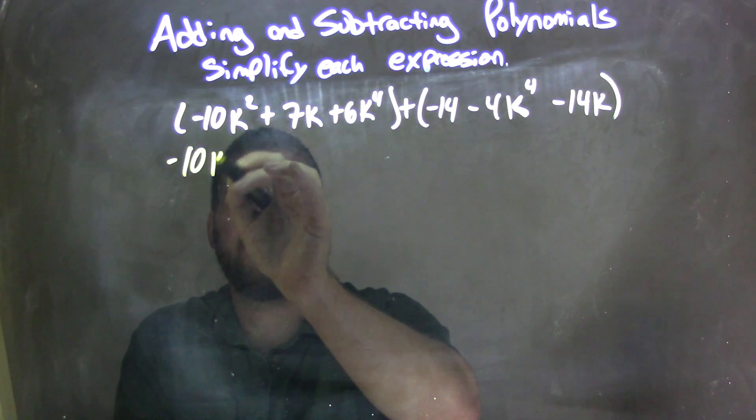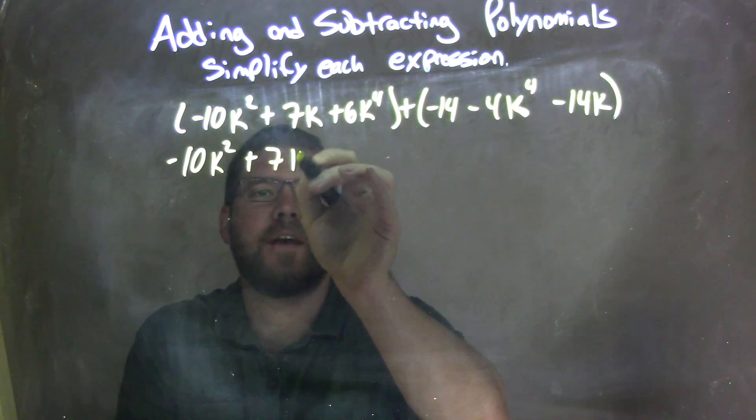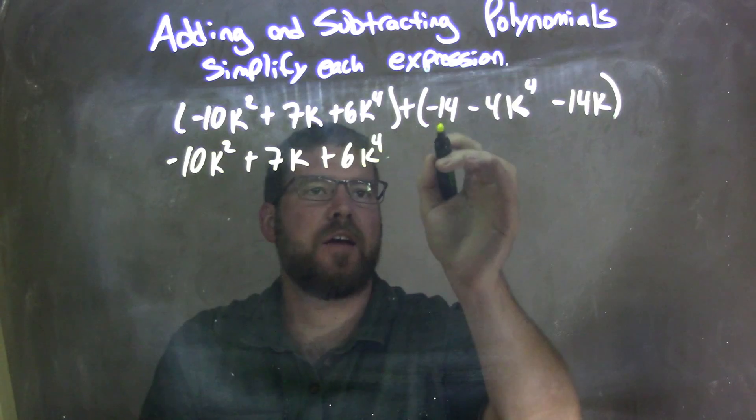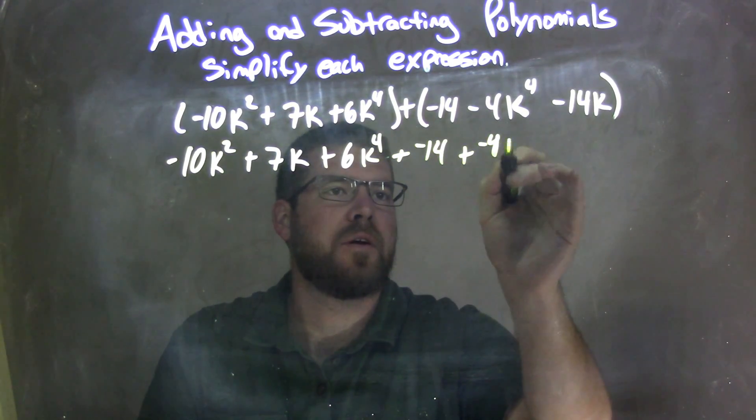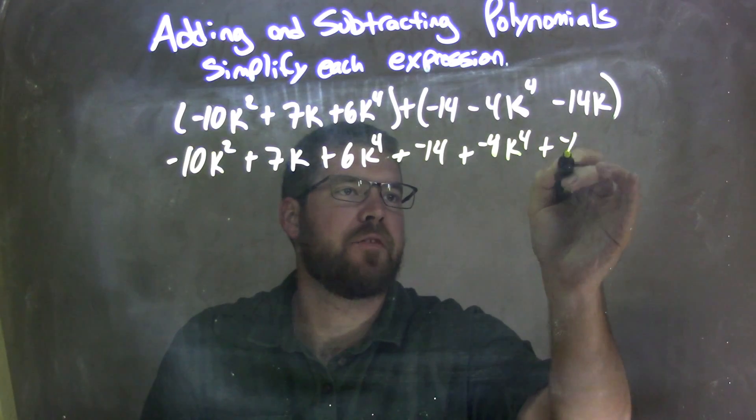So negative 10k squared plus 7k, 6k to the fourth, left side really doesn't change. Now I'm adding a negative 14, adding a negative 4k to the fourth, and adding a negative 14k.